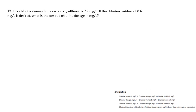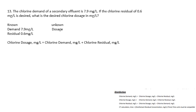Question thirteen: the chlorine demand of a secondary effluent is 7.9 mg/L. If a chlorine residual of 0.9 mg/L is desired, what is the desired chlorine dosage? You know your demand and the residual you want left over; you're looking for the dose to achieve that. Using the dosage formula — chlorine demand plus chlorine residual — 7.9 plus 0.6 mg/L gives a chlorine dose of 8.5 mg/L.